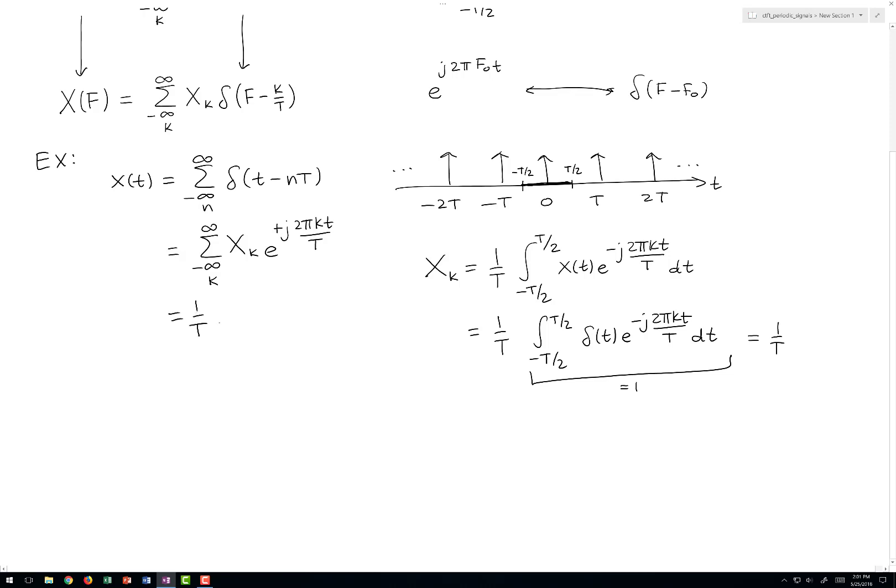So our Fourier series expansion of this periodic signal can be written as follows: 1 over T times this infinite sum, e to the j 2 pi kT over big T. Now it's time to compute the Fourier transform of this periodic signal.